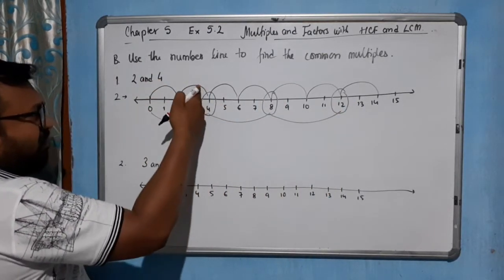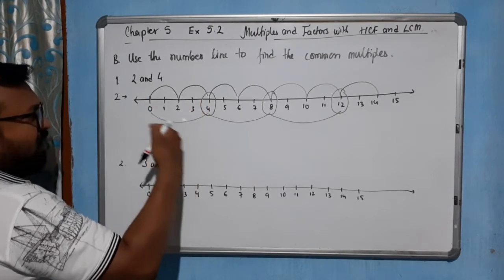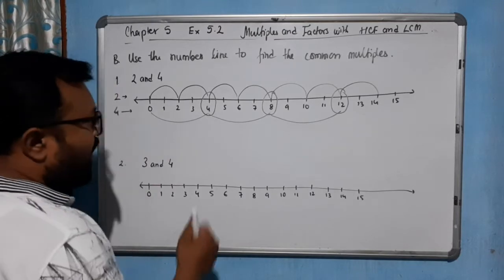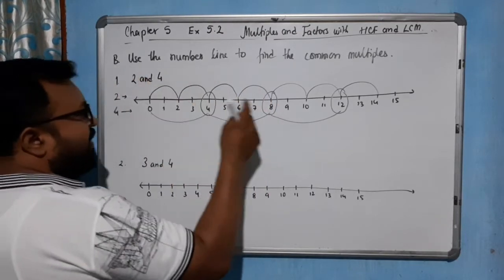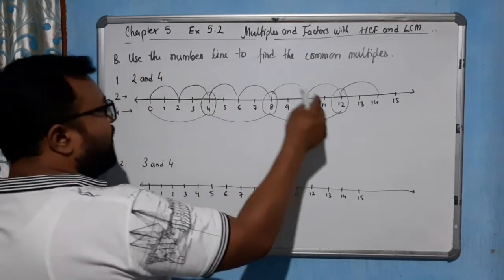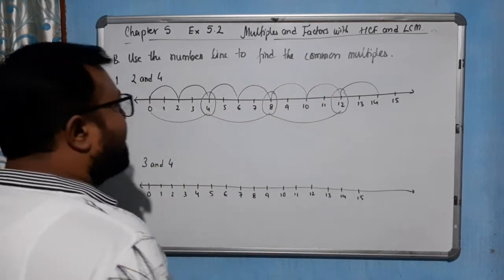4 is also multiple of 2, 4 is also multiple of 4. This is 4. Lower part is for 4. Now, 8 is also multiple of 2, 8 is also multiple of 4. 12 is also multiple of 2 and 12 is also multiple of 4.